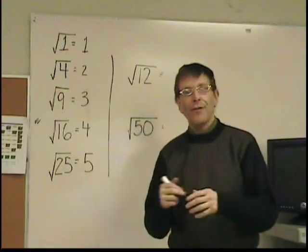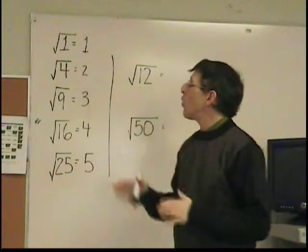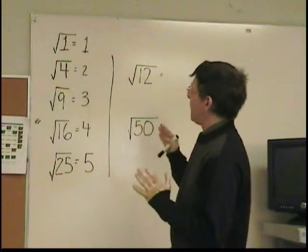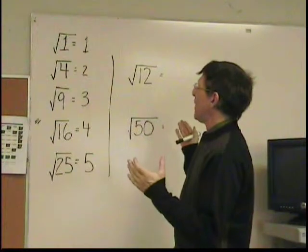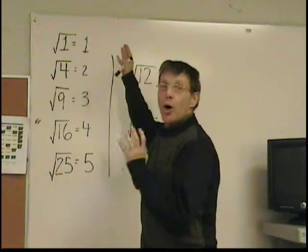Today, we're going to simplify radicals. Now, if you remember from the last lesson, we worked with perfect square numbers. A perfect square number is a number whose square root comes to a whole number.